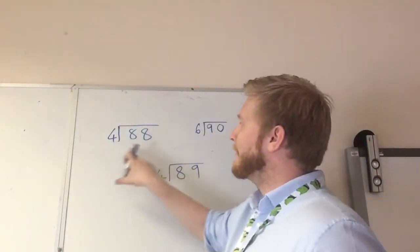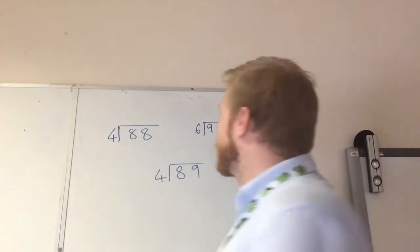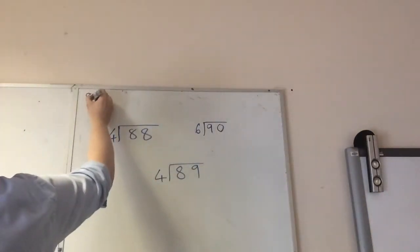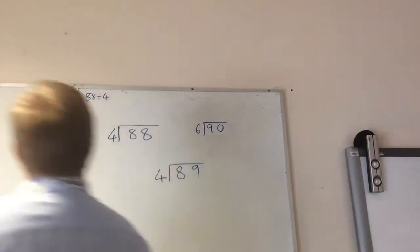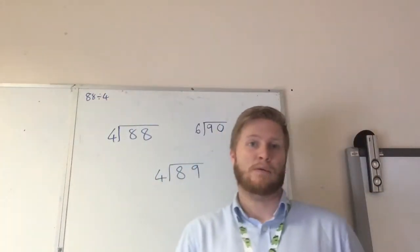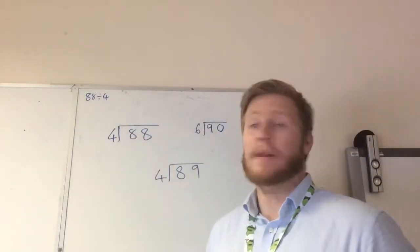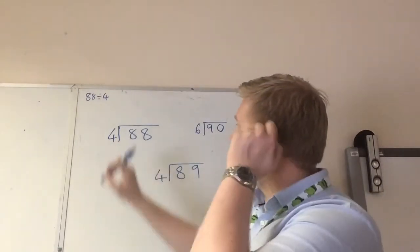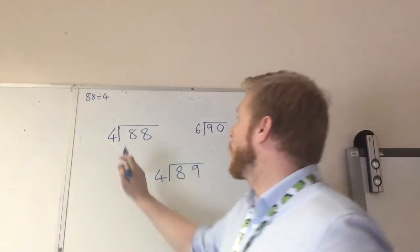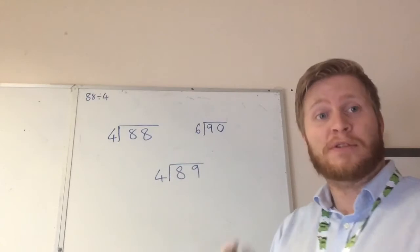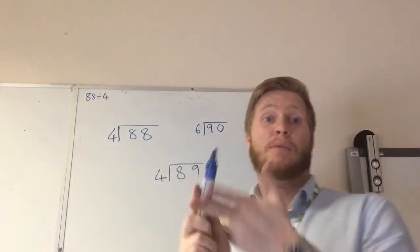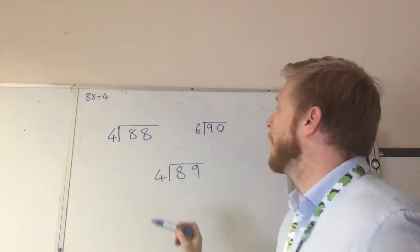So on this one, you can see we're doing 88 divided by 4. So if you've got 88 divided by 4 as a question, this is how you'd set it out. And remember, each square would have its own number in there. Now this time, we work this way, which is opposite to addition, subtraction, and multiplication. So we work our way along the number.